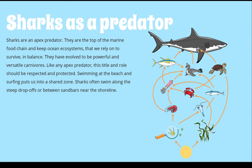Sharks are an apex predator, and it's really important that we don't forget that. They are at the top of the marine food chain and help keep ocean ecosystems in balance — and we rely on those healthy oceans to survive. They evolved over 400 million years ago to be powerful and versatile carnivores and really haven't changed much since. Like any apex predator, this title and role should be respected and protected. When we swim or surf in the ocean we are putting ourselves into a shared zone with aquatic animals, and sharks often swim along steep drop-offs or between sandbars near the shoreline.